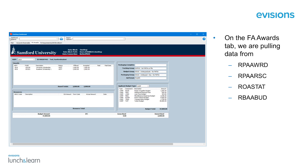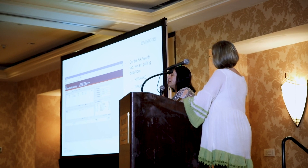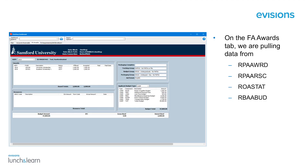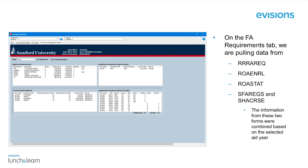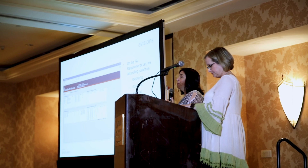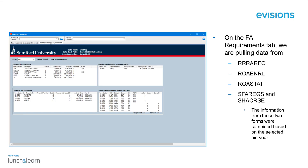On the third tab, we're pulling in financial aid information from four different Banner forms — budget information, awards, and packaging information. We sat down with our end users and they defined what they wanted to see on each form and how they wanted it organized. On the final tab of this dashboard, we're pulling in requirements so they can see if they're enrolled, how many hours, any tracking requirements not satisfied, and registration. We're combining not only registered courses but courses earned for the academic financial aid period — combining data that in Banner would have required going to two different forms.